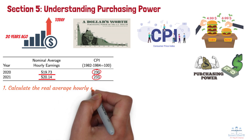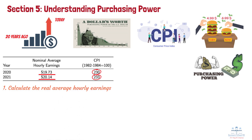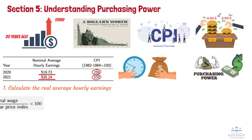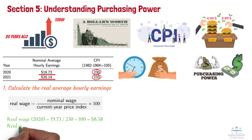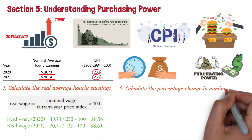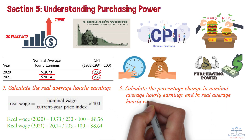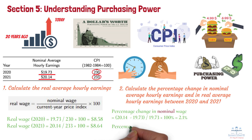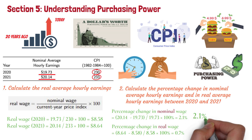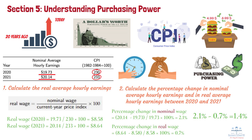Number 1: Calculate Real Average Hourly Earnings. Nominal average hourly earnings are the number of dollars a worker receives. Real average hourly earnings measure the purchasing power of nominal earnings. To calculate real average hourly earnings, divide the nominal average earnings by the CPI for that year and multiply by 100. Real average hourly earnings for 2020 and 2021 equal $8.58 and $8.64, respectively. Number 2: Calculate the percentage change. The percentage change in nominal average hourly earnings equals 2.1%. The percentage change in real average hourly earnings equals 0.7%. We can conclude that because of inflation, real average hourly earnings increased by 1.4% less than did nominal average hourly earnings.